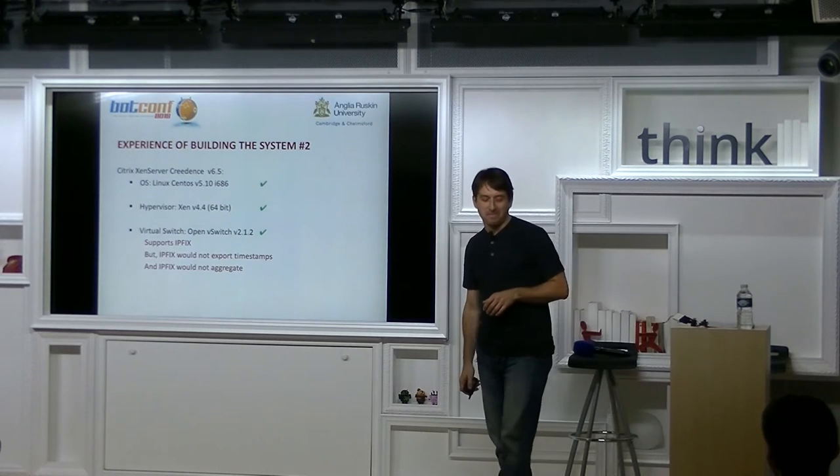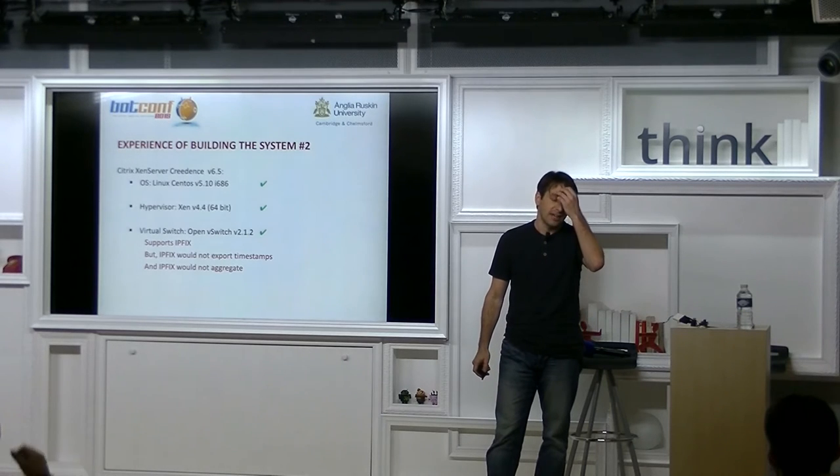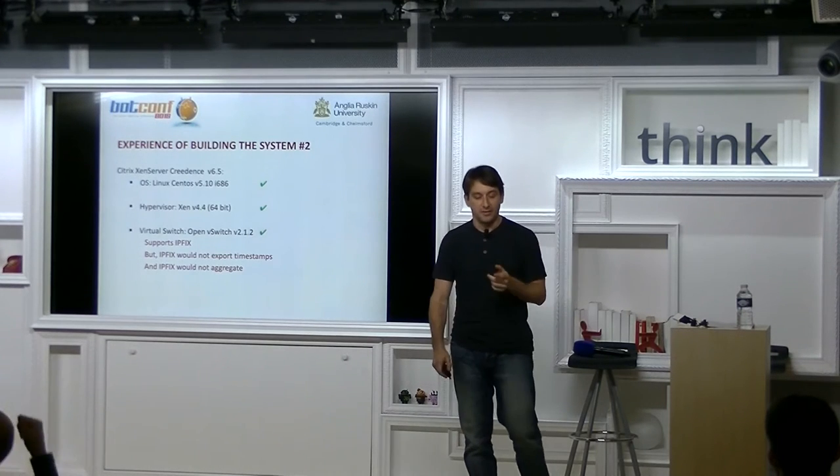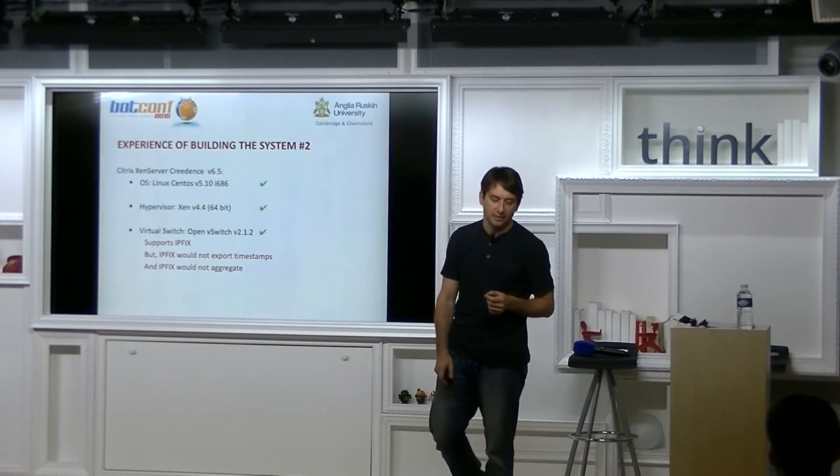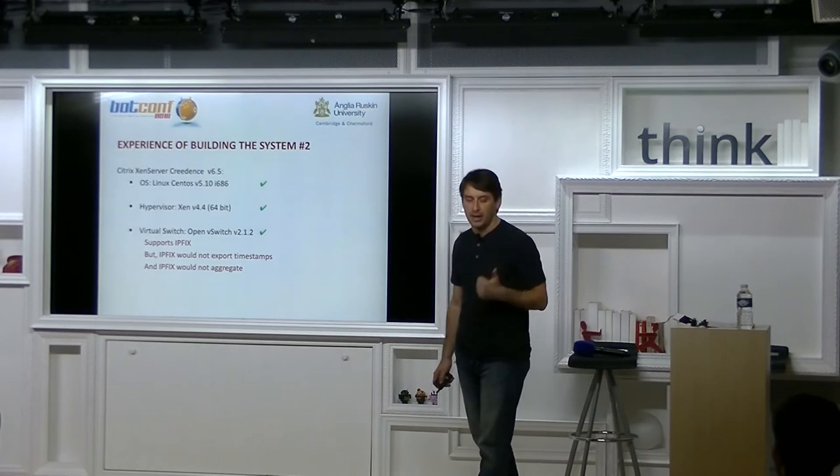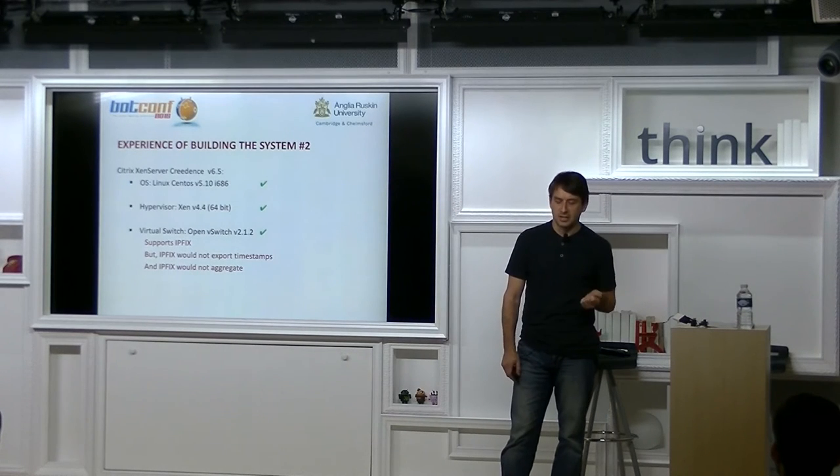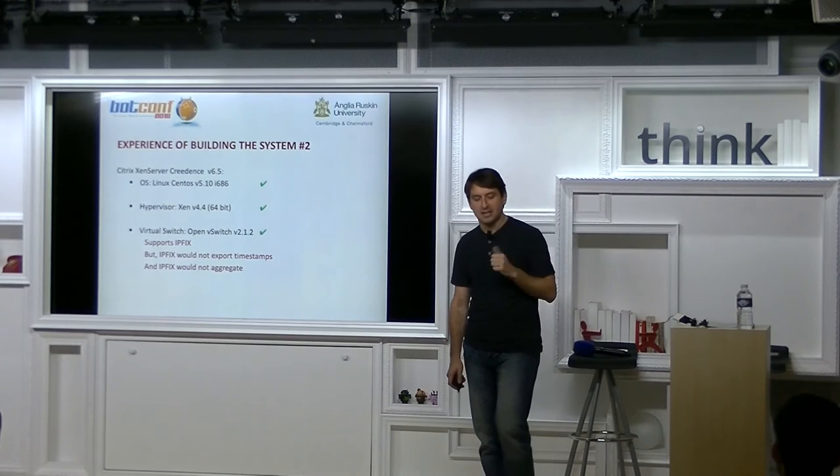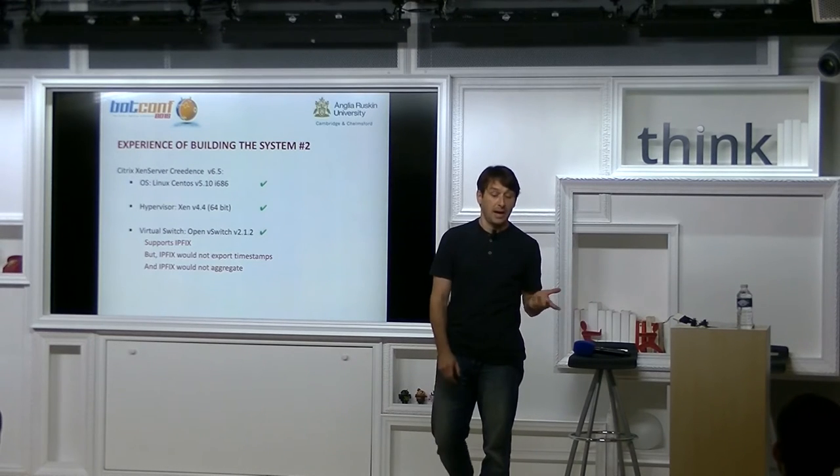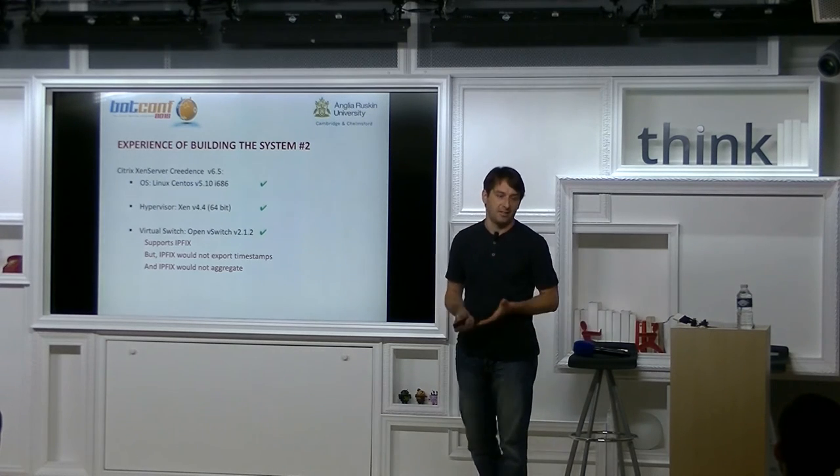About a year down the line, Citrix released a new version of Xen server, version 6.5. So it runs on CentOS Linux OS, 64-bit. Brilliant. That's what we want. We have Xen hypervisor, 64-bit. And it also comes packaged with Open vSwitch. So really, everything that I want in one package. My prayers are answered. I can start collecting some data now. Because version 2.1.2, Open vSwitch supports IPFix. So they said.